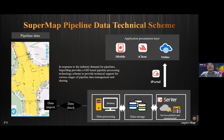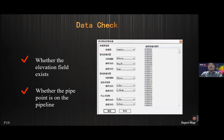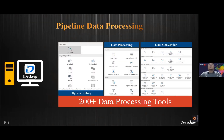In response to the industry demand for pipelines, SuperMap provides a GIS-based pipeline processing technology scheme to support various stages of pipeline data management and sharing. We can use iDesktop to import, check, and process the pipeline data, then use iServer to publish it as a service, use iPortal to manage the resources, and use iMobile or iClient to visualize on different terminals. Data check verifies whether the pipeline point data participating in the 3D topological network is on the pipeline in 3D space, ensuring correctness of the 3D topological network. If there is no elevation field in the data, we need to add one. There are more than 200 data processing tools in iDesktop.